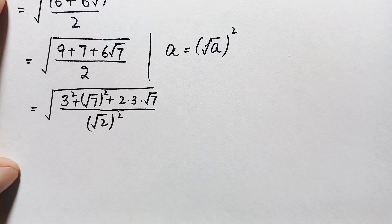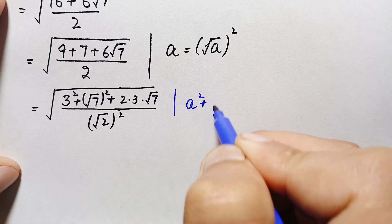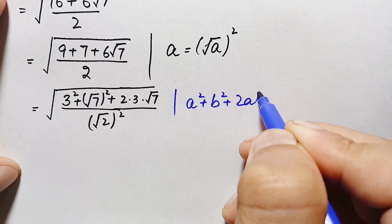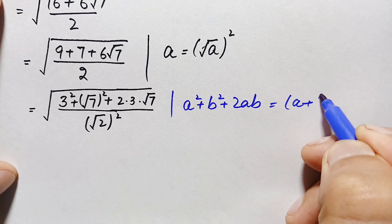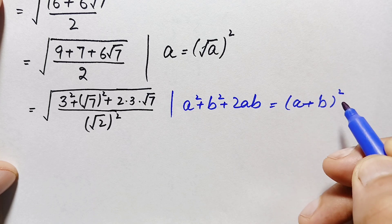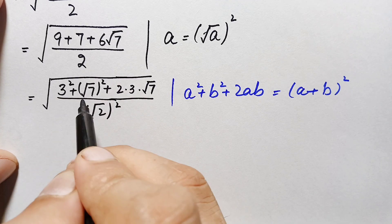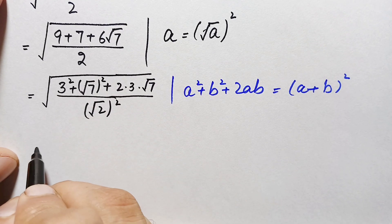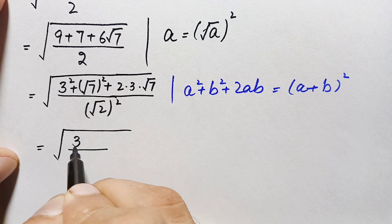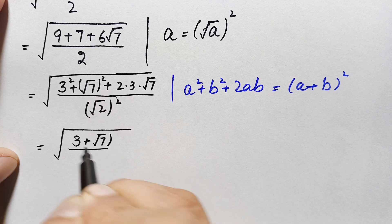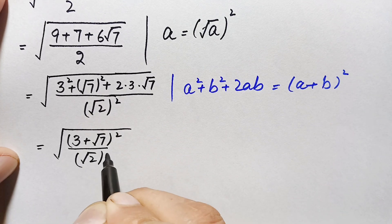Now the numerator is in the form a² plus b² plus 2ab, which matches the algebraic identity (a + b)². Here a = 3 and b = √7. So the numerator becomes (3 + √7)², and the denominator is (√2)², giving us the whole square root of (3 + √7)² divided by (√2)².